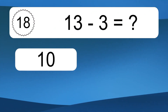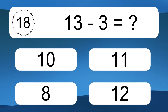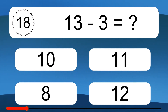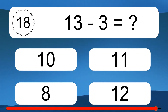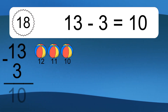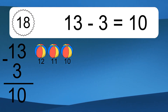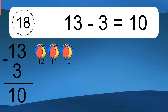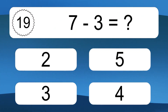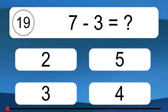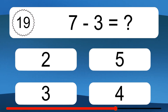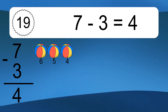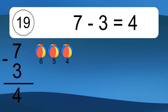13 minus 3 equals what? 13 minus 3 equals 10. Let's count it: 12, 11, 10. 7 minus 3 equals what? 7 minus 3 equals 4. Let's count it: 6, 5, 4.